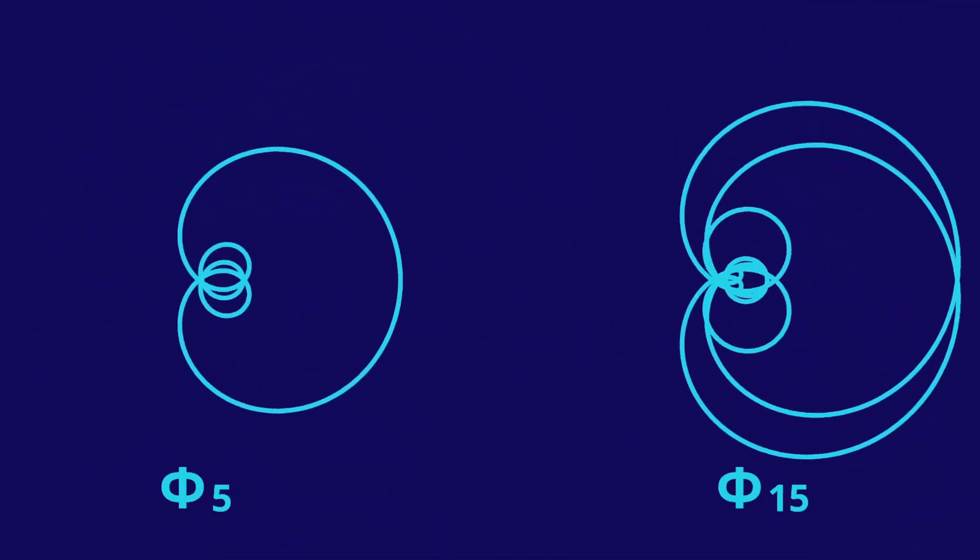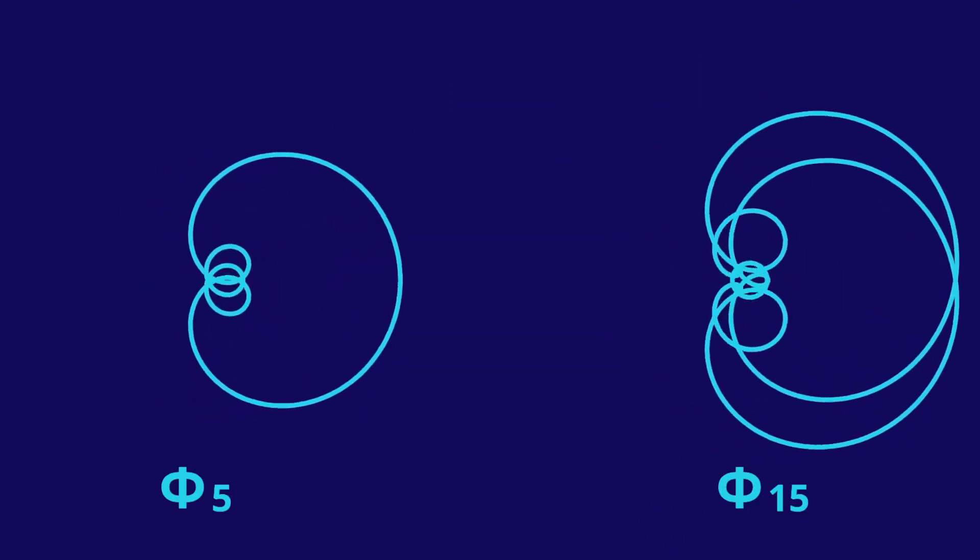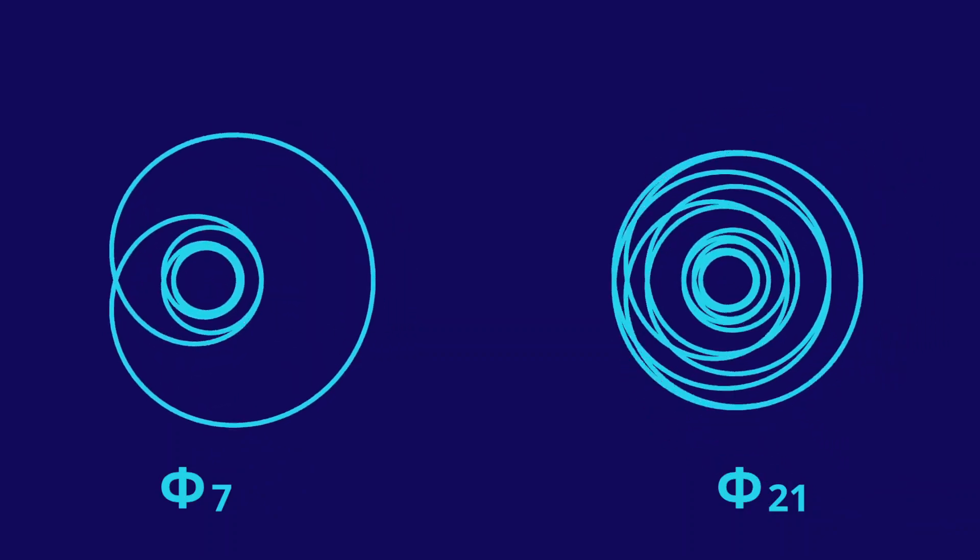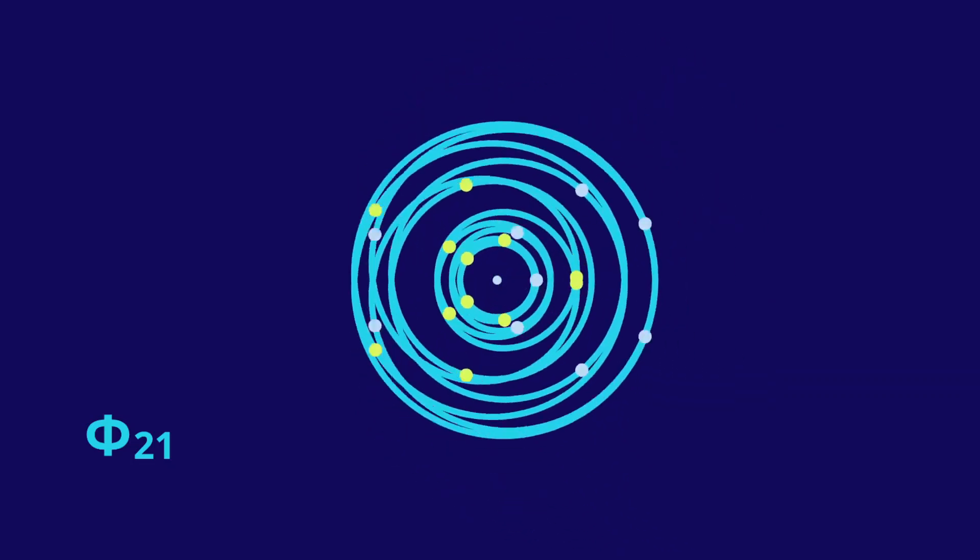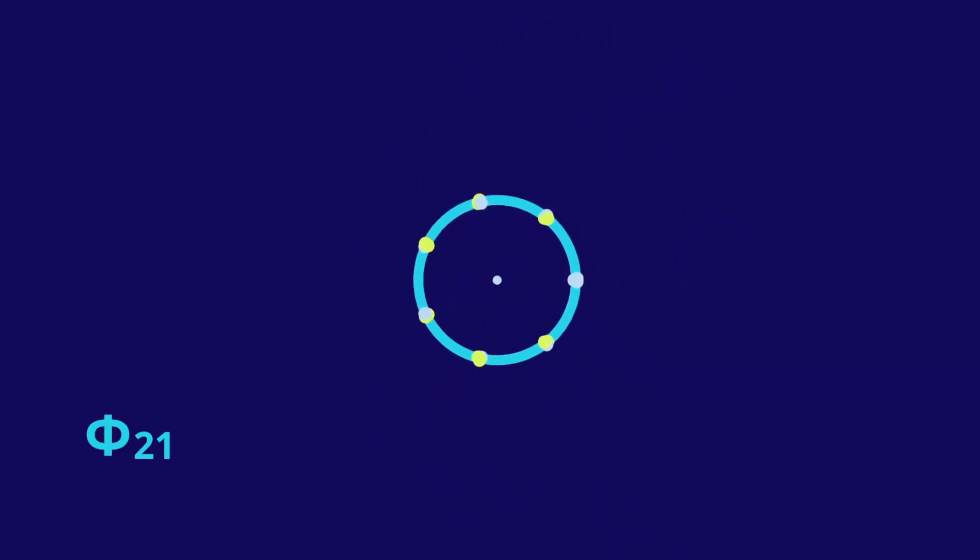But not for primes and their triples. The animation for the 5th cyclotomic is quite different from the 15th. And the 7th is quite different from the 21st. But let's notice, as the 21st approaches radius infinity, the points come together in groups of 3. This happens because there are 12 roots. Or 4 times 3.